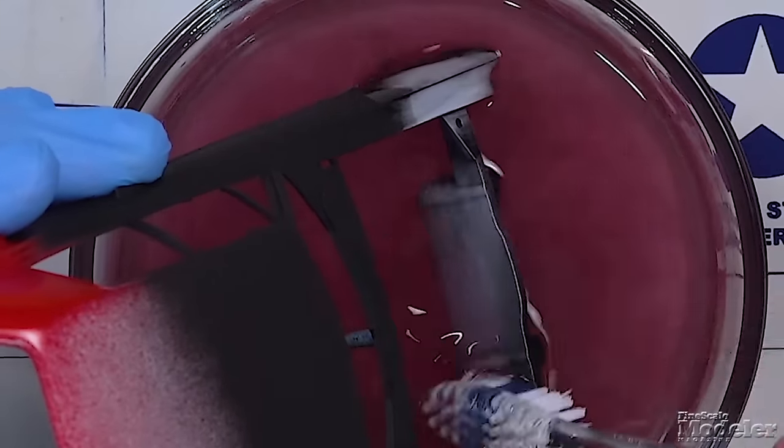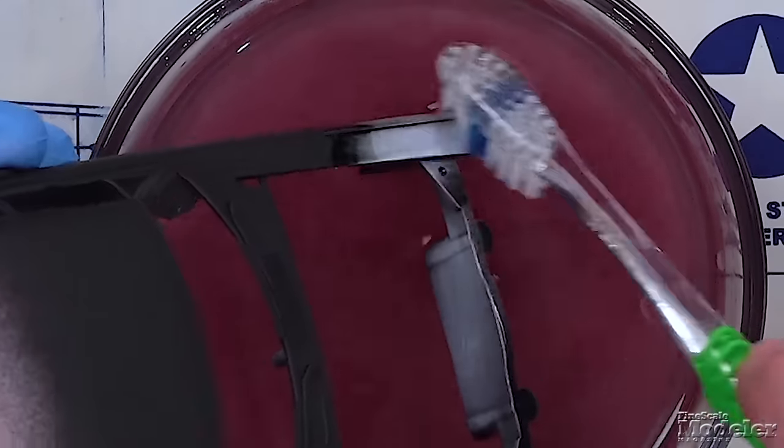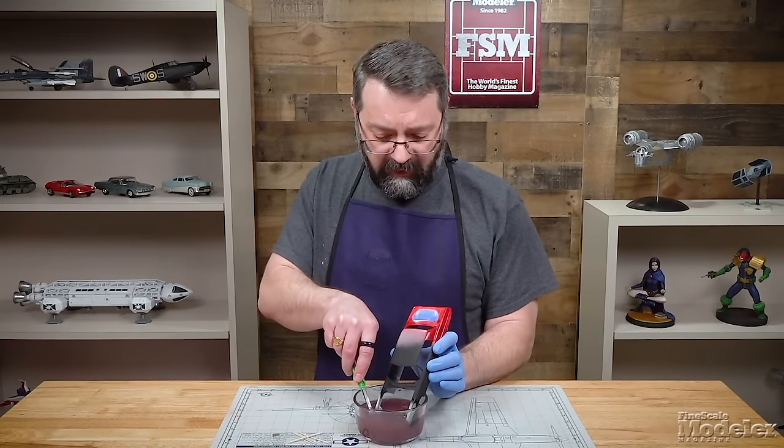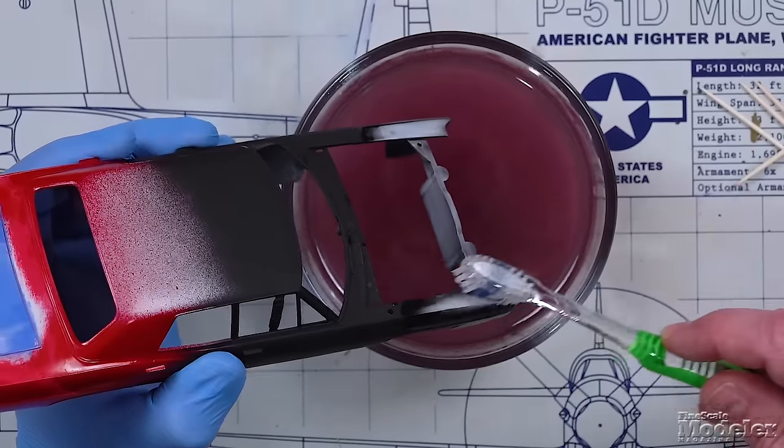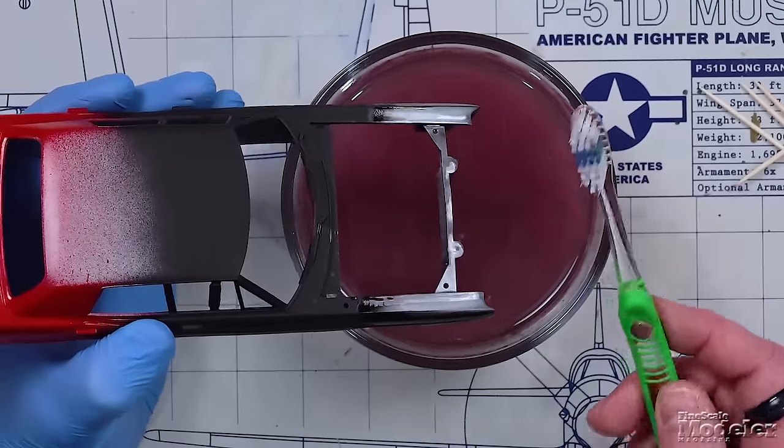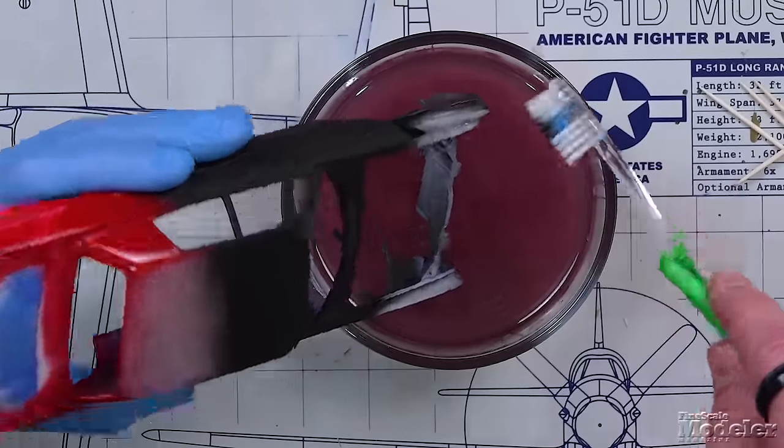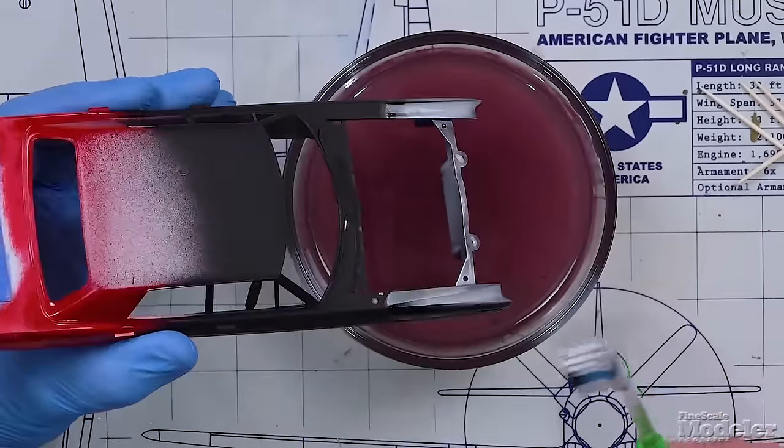Now if I wanted to, just like on the rear end, if I wanted to really work at it I could also take that primer off too, which if I'm going to repaint I probably would. But you can see just how easily it's taking that acrylic paint off.